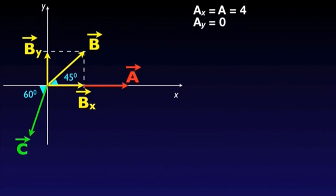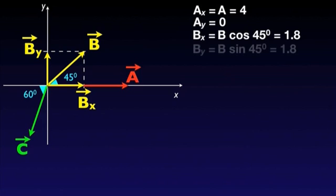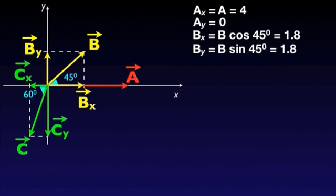BX is 1.8 and BY is 1.8 as well. Similarly, we can find CX 1.5 and CY 2.6.